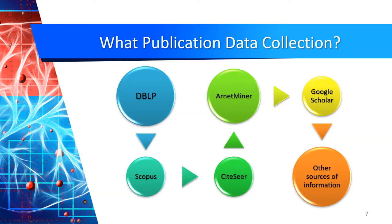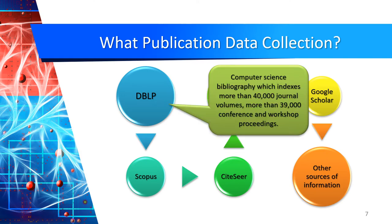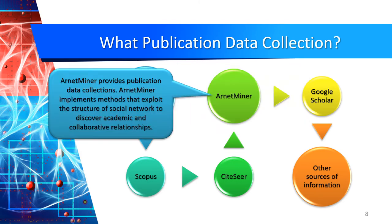Where are we going to collect information about publications? There are different sources of information available on the internet, and we can use some of them freely while others are not free. First of all, there is the DBLP, which is a computer science bibliography that indexes more than 40,000 journal volumes and more than 39,000 conference and workshop proceedings. Also, there is ArnetMiner, which provides publication data collections and implements methods that exploit the structure of social networks to discover academic collaborative relationships.